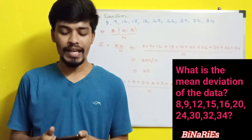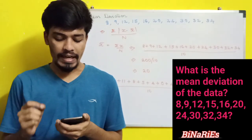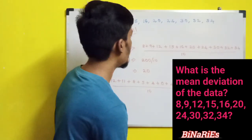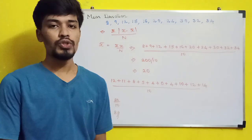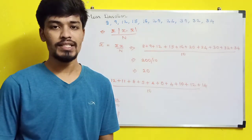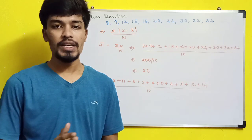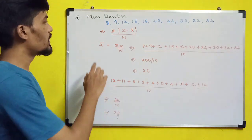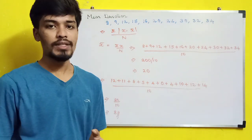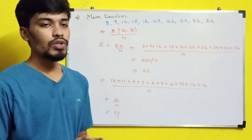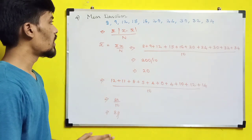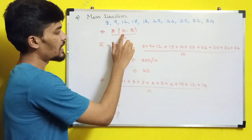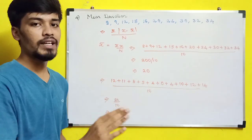The next question: what is the mean deviation of the data 8, 9, 12, 15, 16, 20, 24, 30, 32, and 34? A video on mean deviation statistics has been uploaded in Tamil — please check it. There are two types: mean deviation about mean and mean deviation about median. Since the question does not specify, we use mean deviation about mean. The formula is: summation of |x − x̄| divided by n.